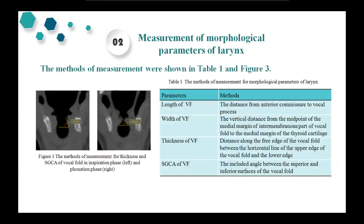The method of measurement was shown in Table 1. All measurements were performed on the coronal plane of the mid-part of the intermembranous portion of the vocal fold. The method of measurement of thickness and subglottal convergence angle during vibration at phonation was shown in Figure 3.